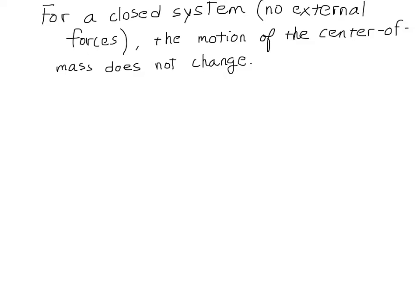We learned in class today that for a closed system — that is, a system without any external forces — the motion of the center of mass does not change. This is because from Newton's second law, F net equals mass times acceleration, and if there are no forces, or the sum of the forces is zero on the system, then the acceleration must also be zero.